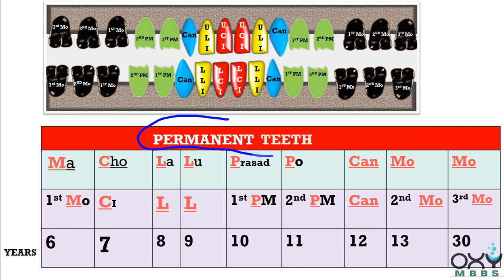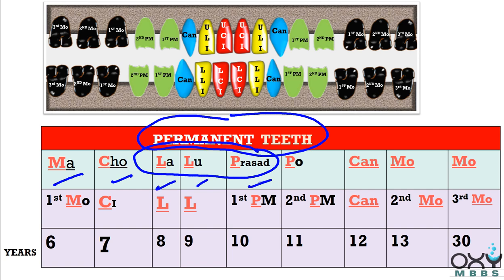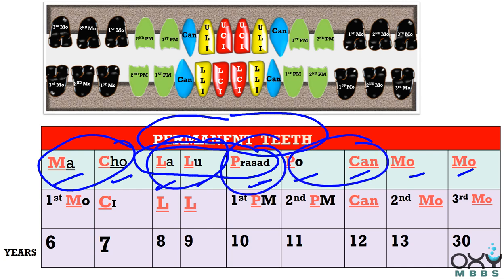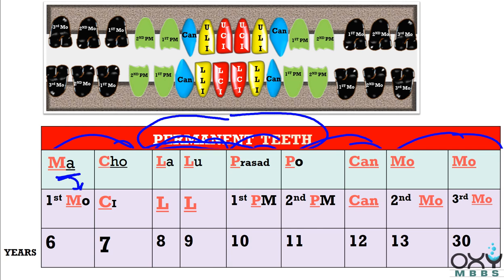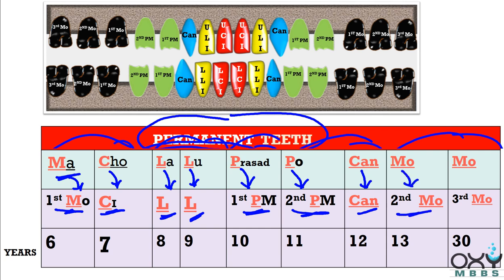Now coming to permanent dentition — for permanent dentition, just remember Macho Lalu Prasad Pauken Momo. From 'Ma,' it is first molars. From 'Cho,' it is central incisors. From 'LA,' these are lower lateral incisors. And these are upper lateral incisors. From 'P' in Prasad, these are first premolars. From 'P' in Po, these are second premolars. From 'Can,' these are canines. From 'Mo,' these are second molars. From this next 'Mo,' these are third molars. And this sequence is in years.